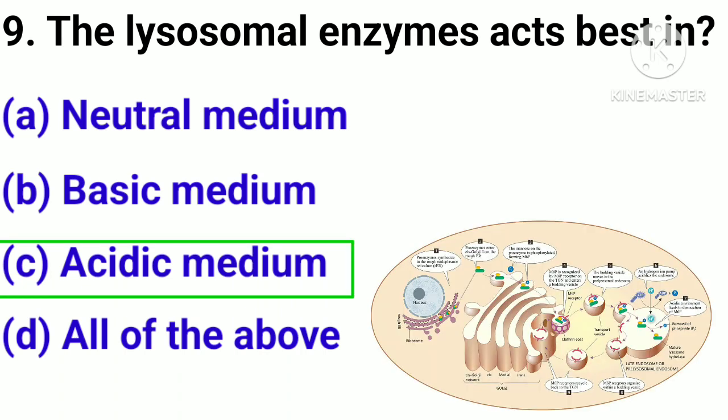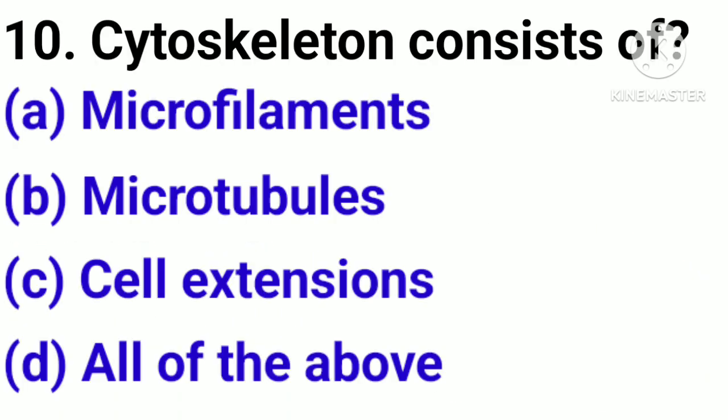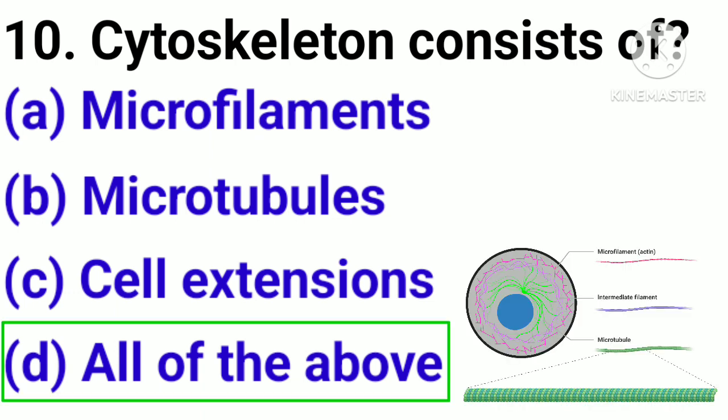Correct answer: option C, Acidic medium. Question number 10. The cytoskeleton consists of: option A, Microfilaments; option B, Microtubules; option C, Cell extensions; option D, All of the above. Correct answer: option B.